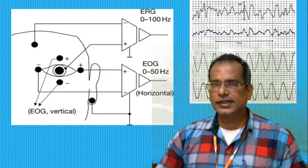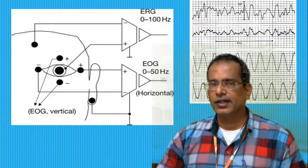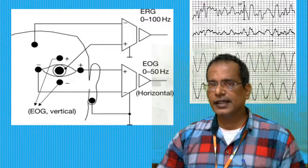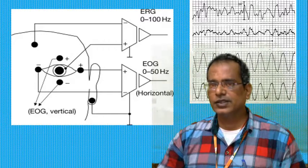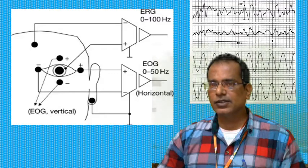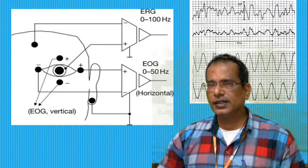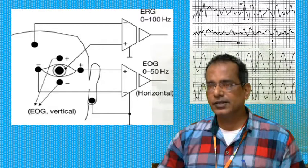Electrodes placed above the eye allow observation of vertical movement of the eyeball. The EOG frequency range is 0 to 50 Hz. The corresponding waveform shows eyeball movement with amplitude varying according to the movement.